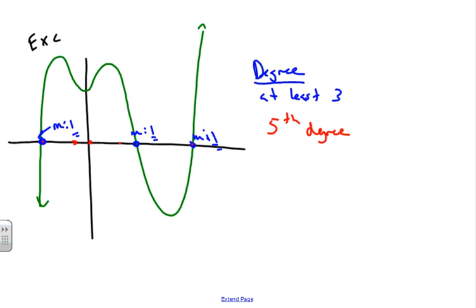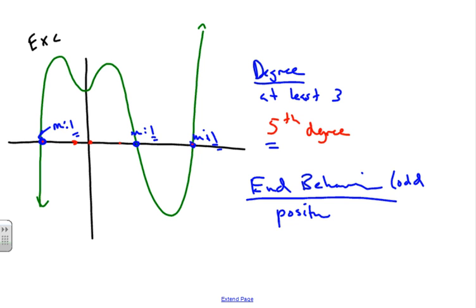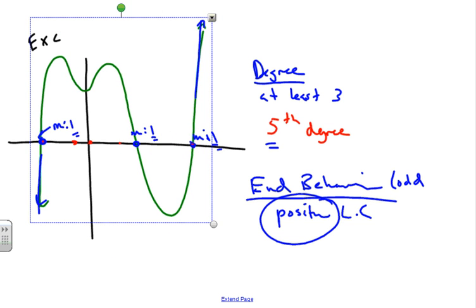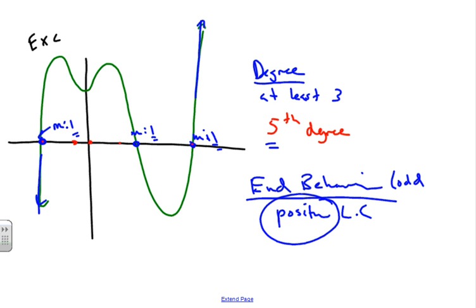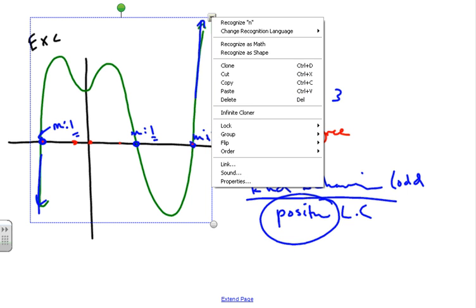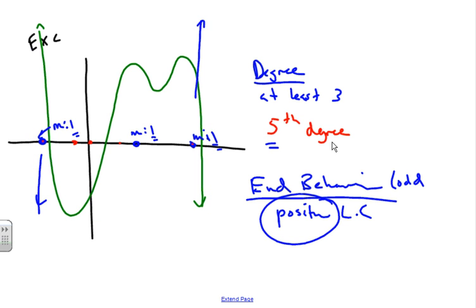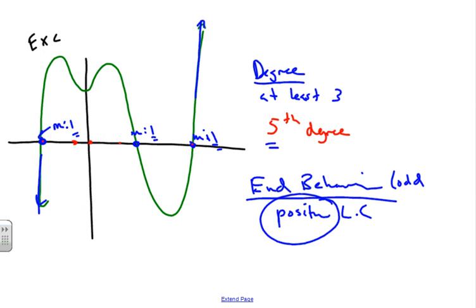So this is a fifth degree polynomial, which is odd. For an odd degree polynomial with a positive leading coefficient, the right end goes up and the left end falls down. Looking at this graph, we can see that it does — so this has a positive leading coefficient. If it weren't, the graph would be reflected — flipped left to right — going in the opposite direction. But this is the original, so it's a positive leading coefficient.